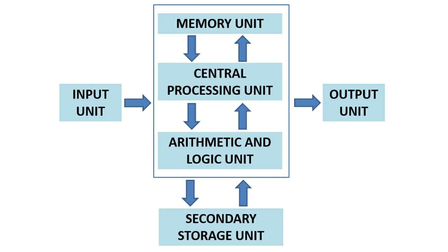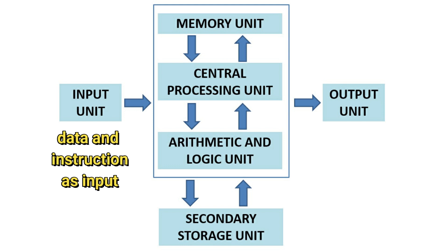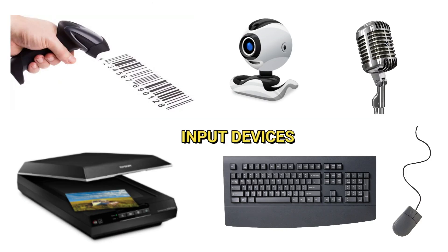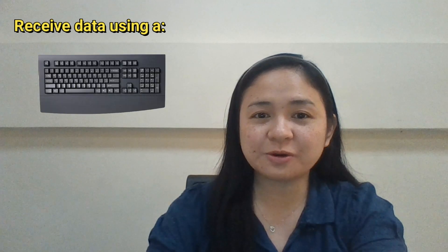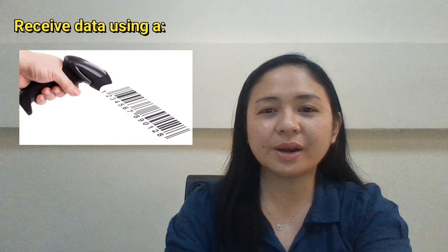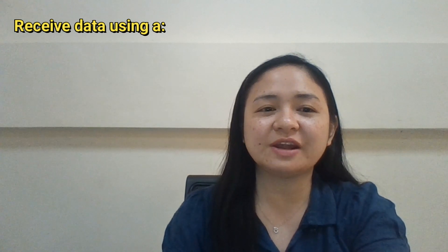The input unit is considered the receiving section, wherein it obtains data and instructions from input devices such as our keyboard and mouse. These data may include the name of a person, a scanned barcode of a product, or even a voice record that can be processed by a computer. Any data captured by input devices is handled in this section — the input unit.